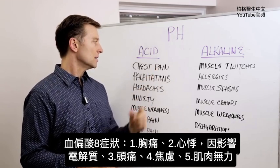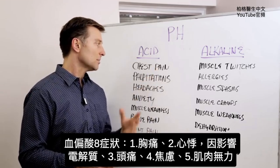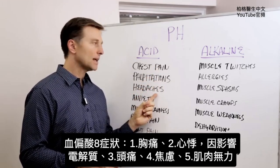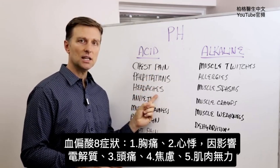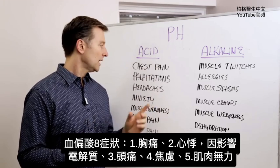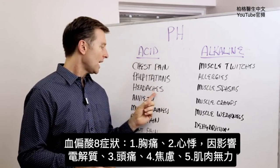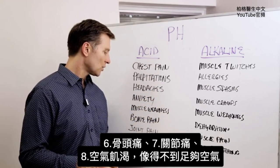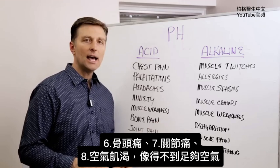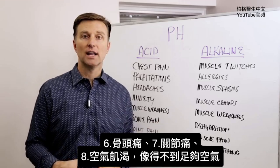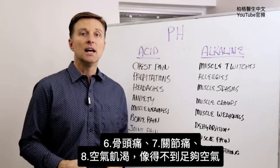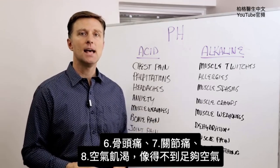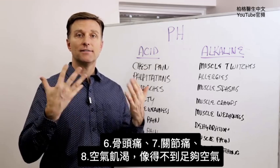If you're too acid, you could possibly have chest pain and palpitations — because it affects the electrolyte mix — headaches, anxiety, muscle weakness, bone pain, joint pain, and air hungry, like you can't get enough air.